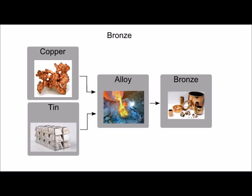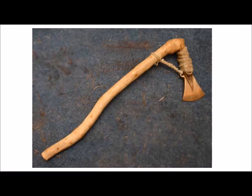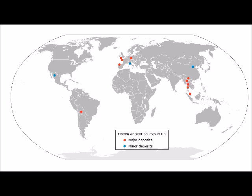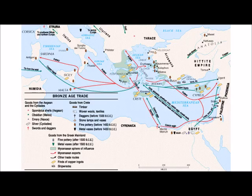Bronze revolutionized human society, not only providing much better, more durable tools and weapons, but it also stimulated international trade. A lot of peoples, like the Hittites of Anatolia, might have access to copper, but they don't have any place to mine tin, so they would have to trade for that. This creates the impetus to develop trade routes with other civilizations in order to acquire the tin needed to smelt bronze. For around 2000 years, bronze would remain the most important metal to civilization.